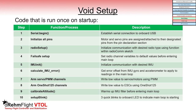Now we've finally gotten to the void setup section of the code. This is a list of the functions and processes that are called here, remembering that the void setup runs only once on startup. I recommend pausing the video and scrolling through the void setup to see all of these things in the code itself, and to read a little more about what each one of them does.